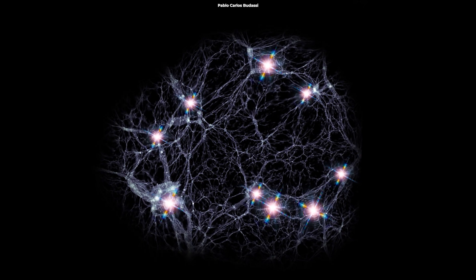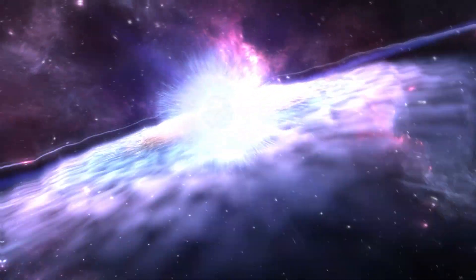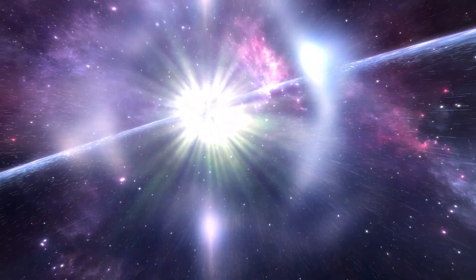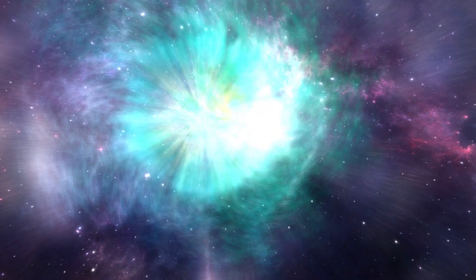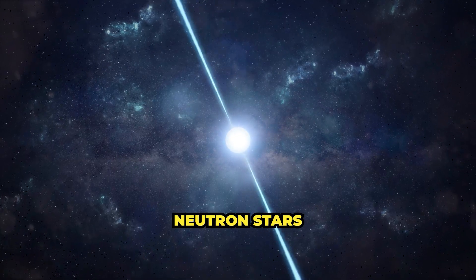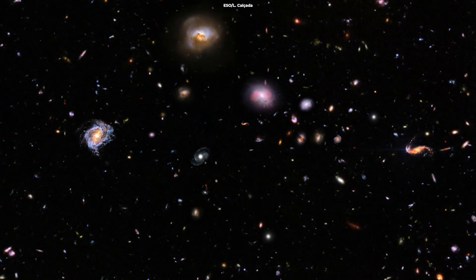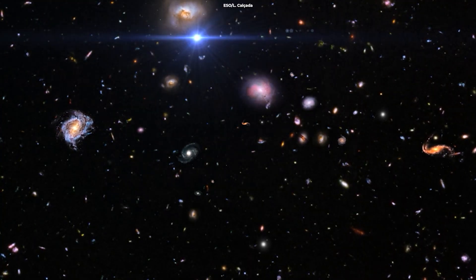Gamma Ray Bursts are extremely energetic explosions that are thought to occur when massive stars collapse, forming black holes or neutron stars. These bursts release intense amounts of Gamma Rays, which are among the most energetic forms of light in the universe.